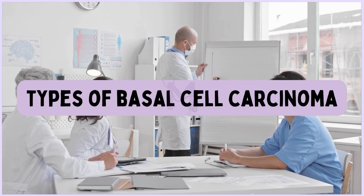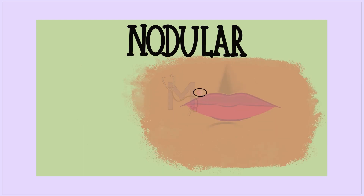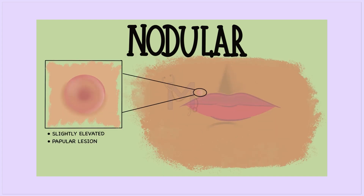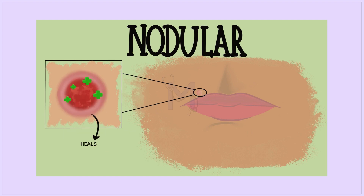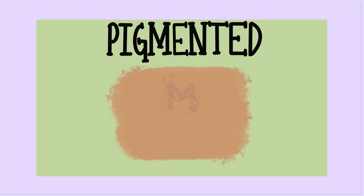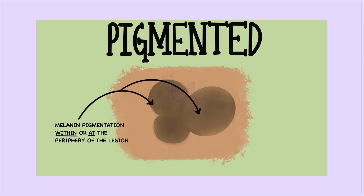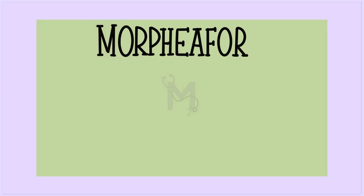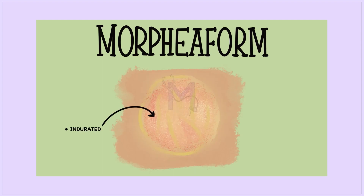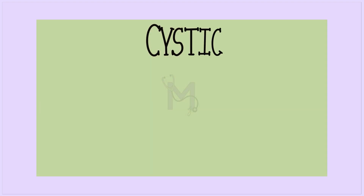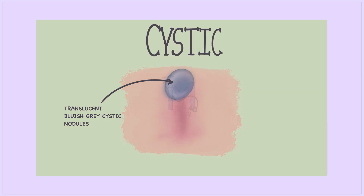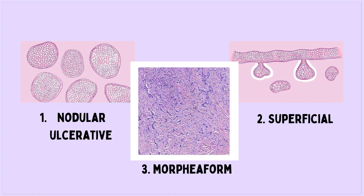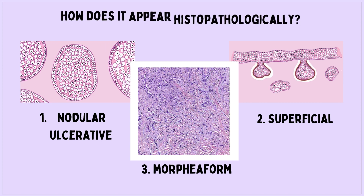There are multiple types of basal cell carcinoma. The most common nodular form presents as a small, slightly elevated papule with a central depression that ulcerates, heals, and breaks down again. The pigmented form presents with melanin pigmentation within or at the periphery of the lesion. The superficial form presents as a scaly red lesion appearing as an atrophic scar. The morpheaform presents as an indurated yellowish plaque, slightly elevated or flat. The cystic form presents as translucent blue-gray cystic nodules.